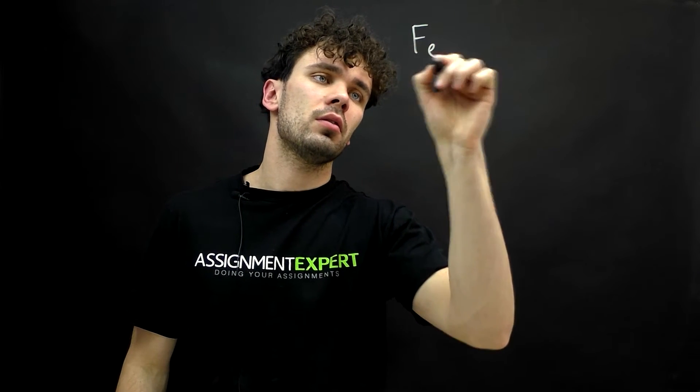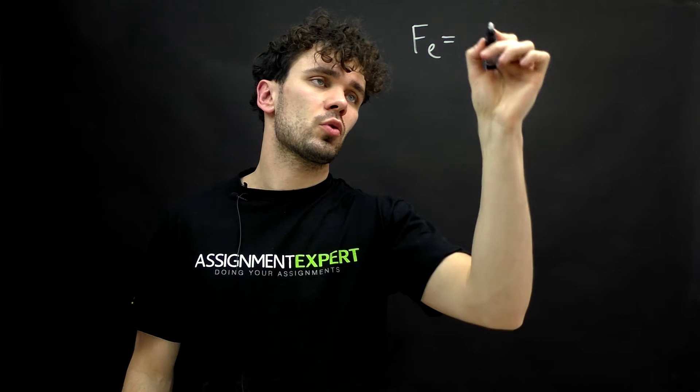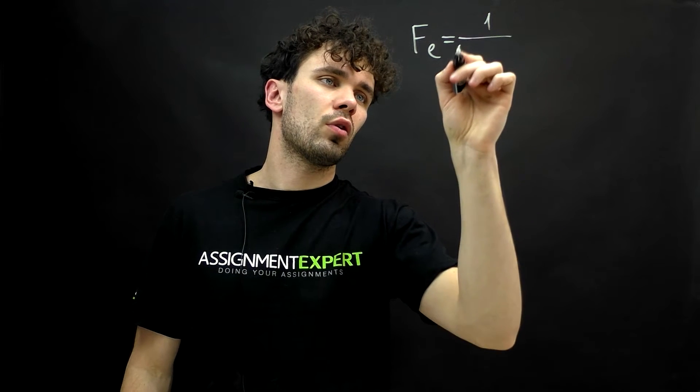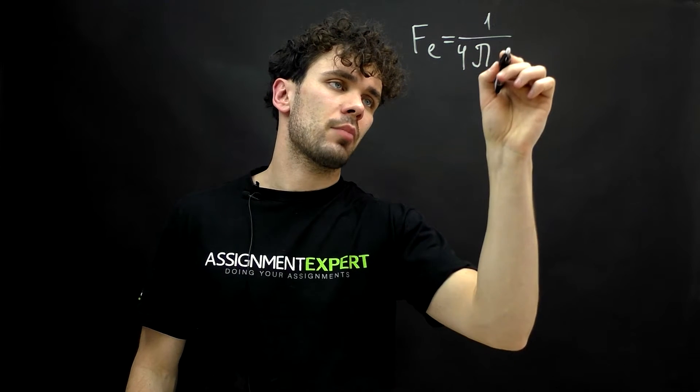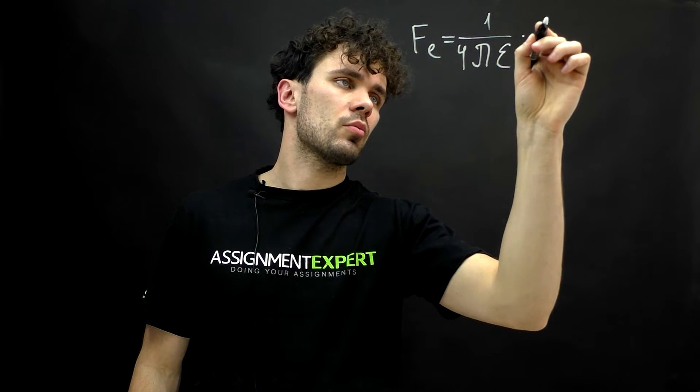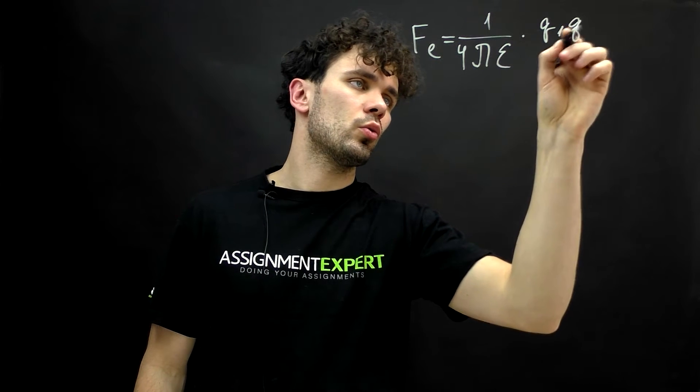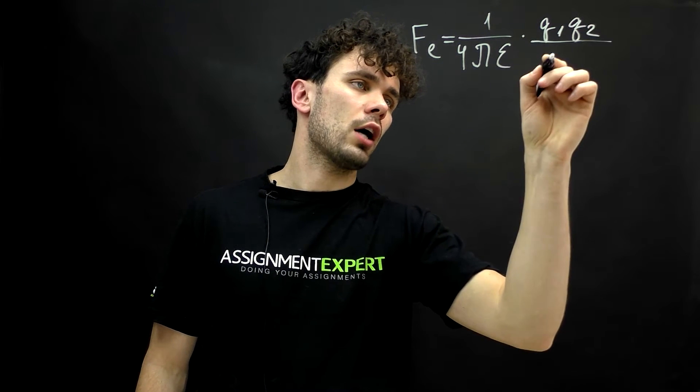So, to find the electrostatic force we can use Coulomb's law. It goes like this. Fe equals 1 over 4 pi times epsilon times q1 q2 over r squared.